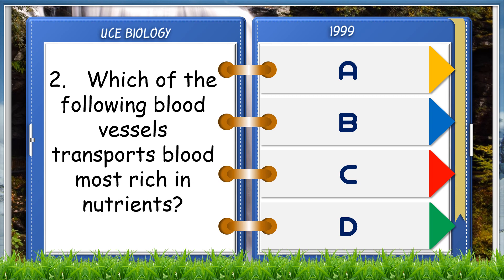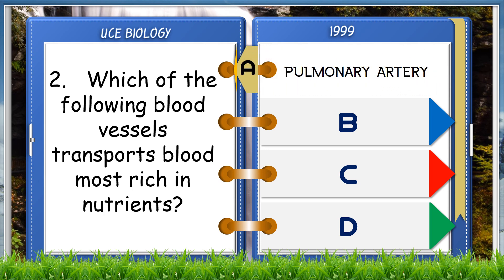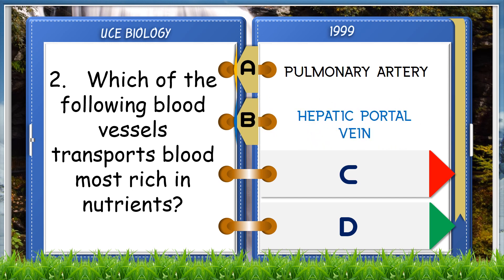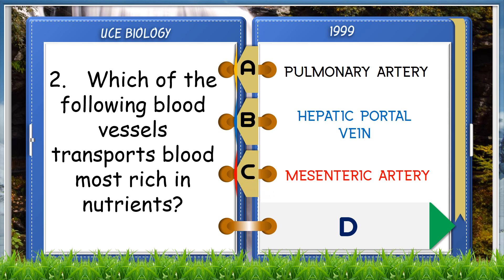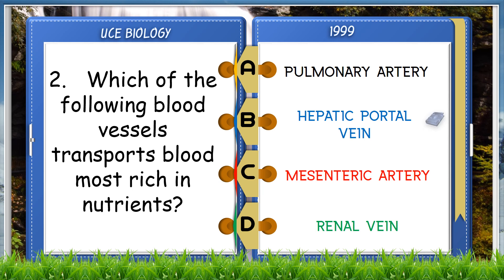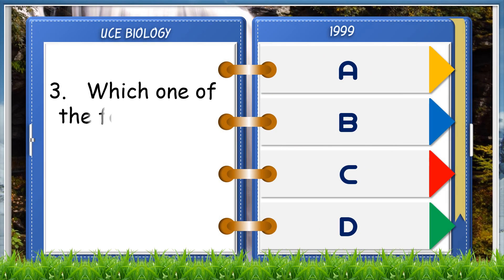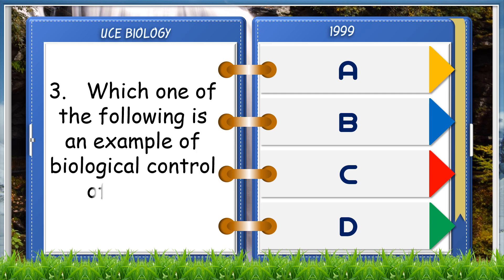Of the following blood vessels, which transports blood most rich in nutrients? A. Pulmonary artery, B. Hepatic portal vein, C. Mesenteric artery, D. Renal vein. The answer is B, hepatic portal vein.